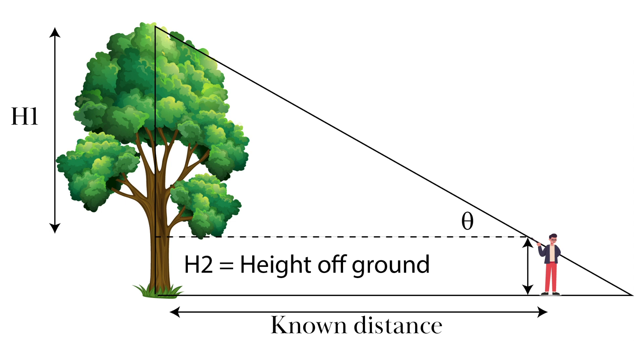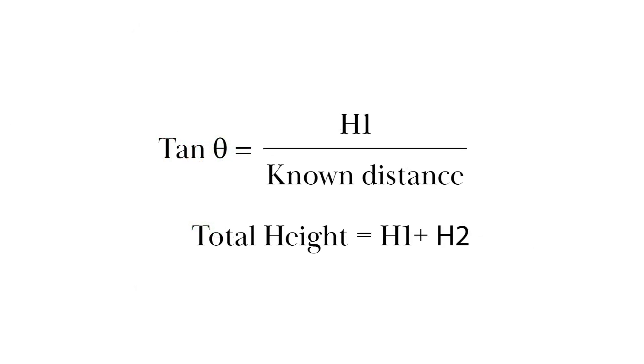Once the distance to the base of the tree, angle to the top, and the height called h2 is known, you can use these formulas to determine the height to the top of the tree.